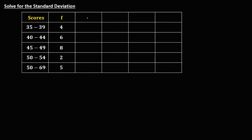First, we need to solve for D. Under column D, put 0 at the middle class. Since we have 5 classes, the middle class is the third class. Going up is negative, so we have negative 1 and negative 2. Going down is positive, so positive 1 and positive 2.